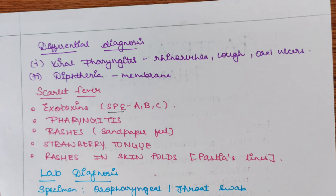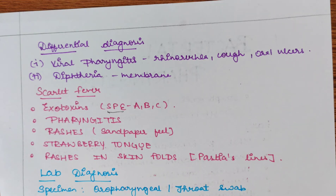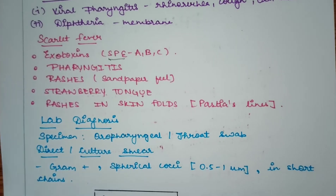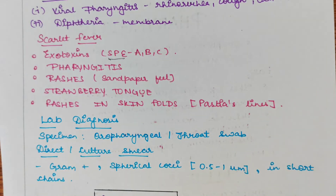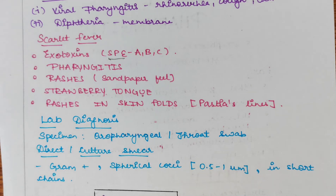We can differentiate streptococcal pharyngitis from diphtheria because in diphtheria there is a formation of a membrane over the tonsil, which is generally a pseudomembrane. Scarlet fever is caused due to exotoxins, which are Streptococcal pyogenes exotoxins A, B, and C. It leads to pharyngitis, rashes which have a sandpaper feel, and strawberry tongue, in which the tongue will become red and the papillae will be enlarged.